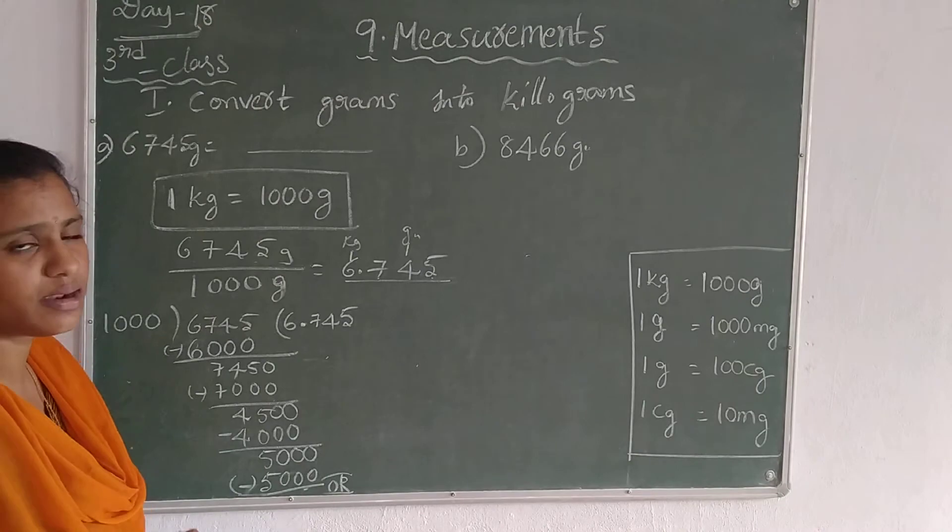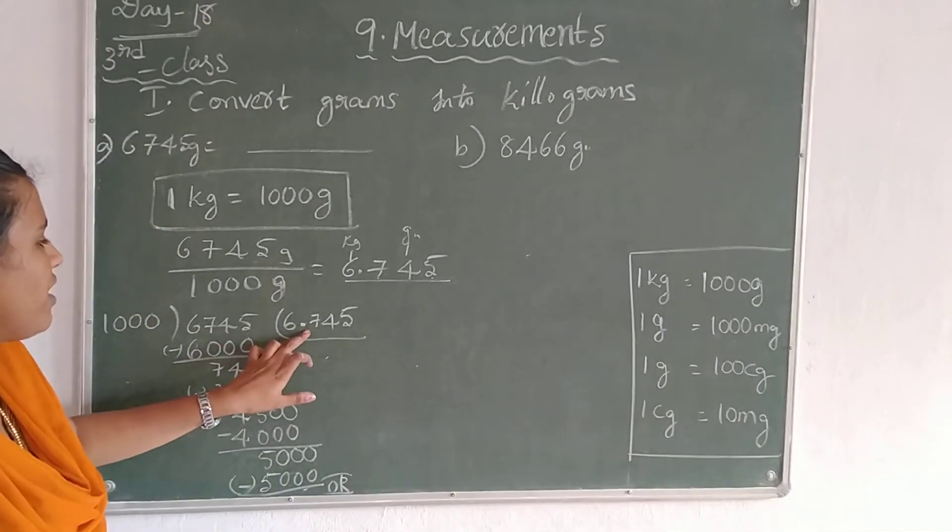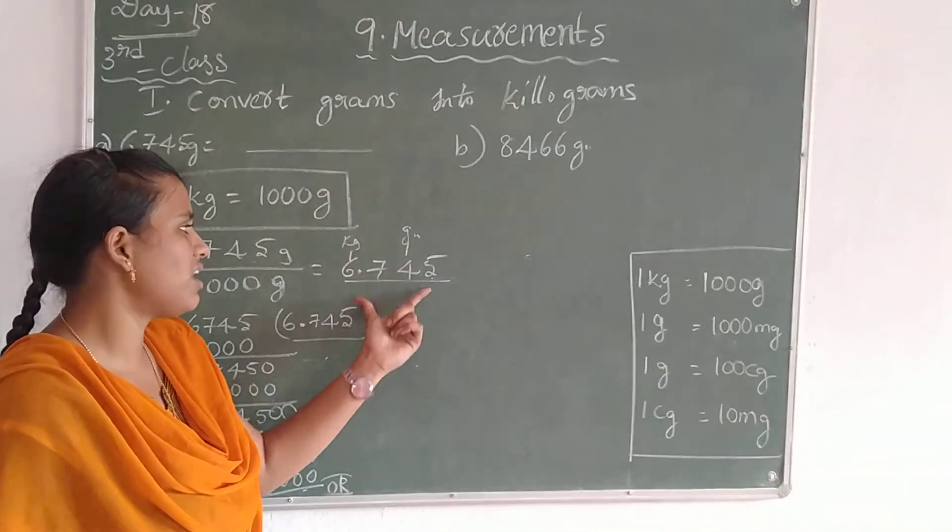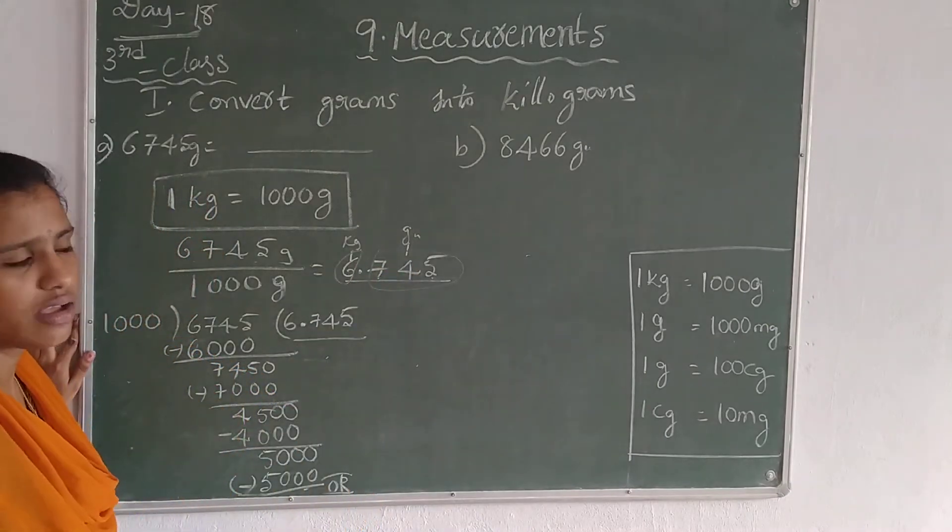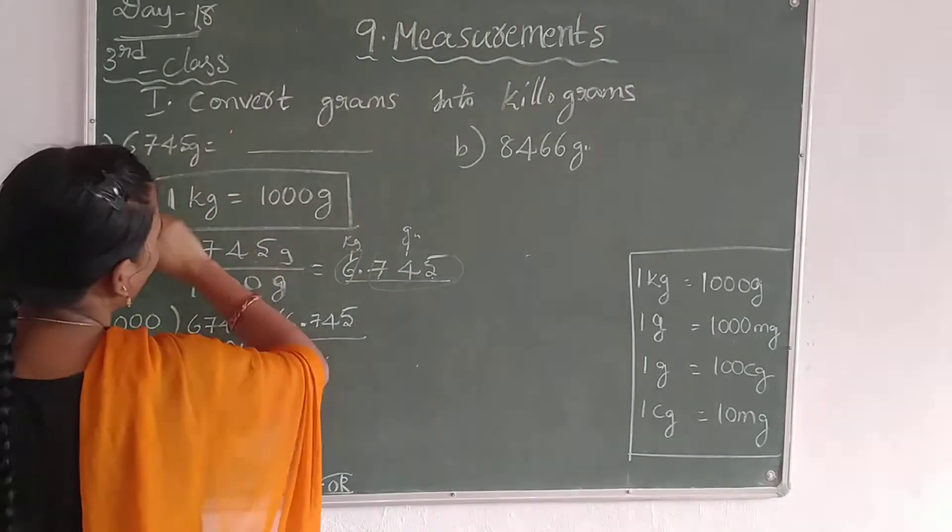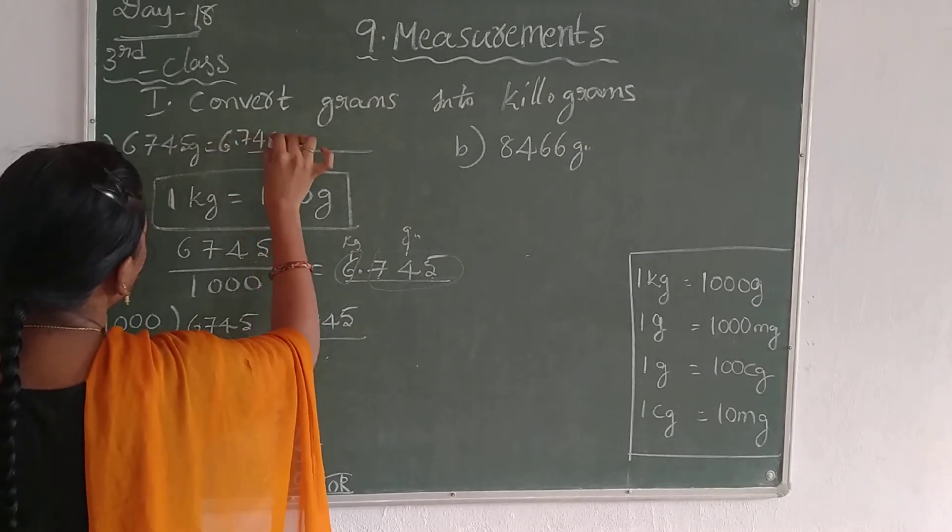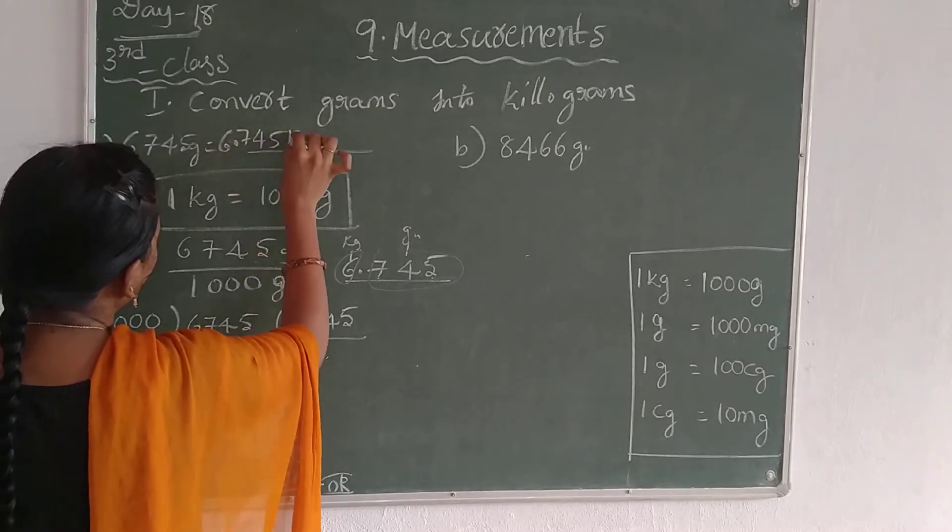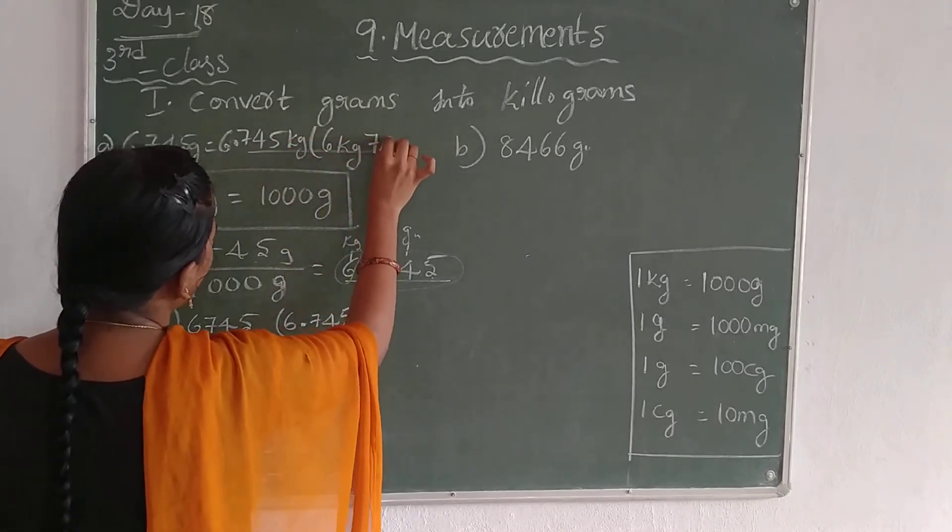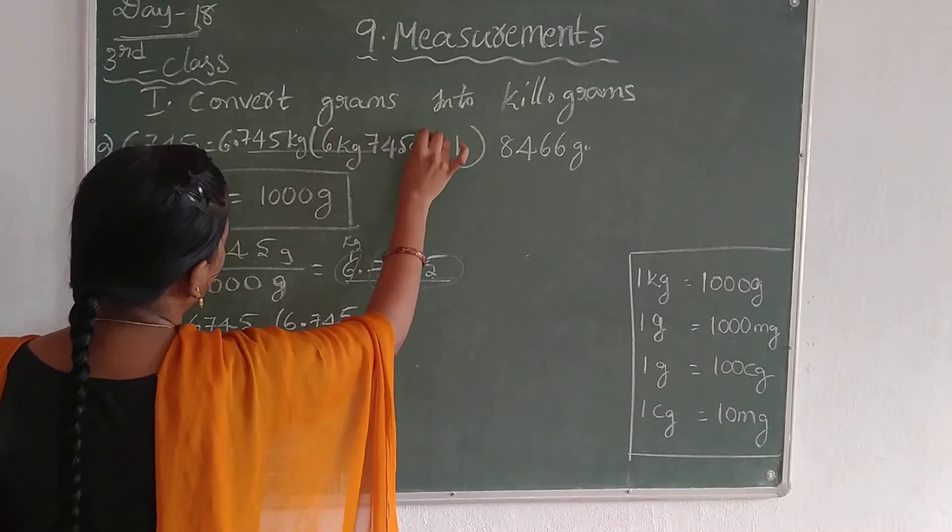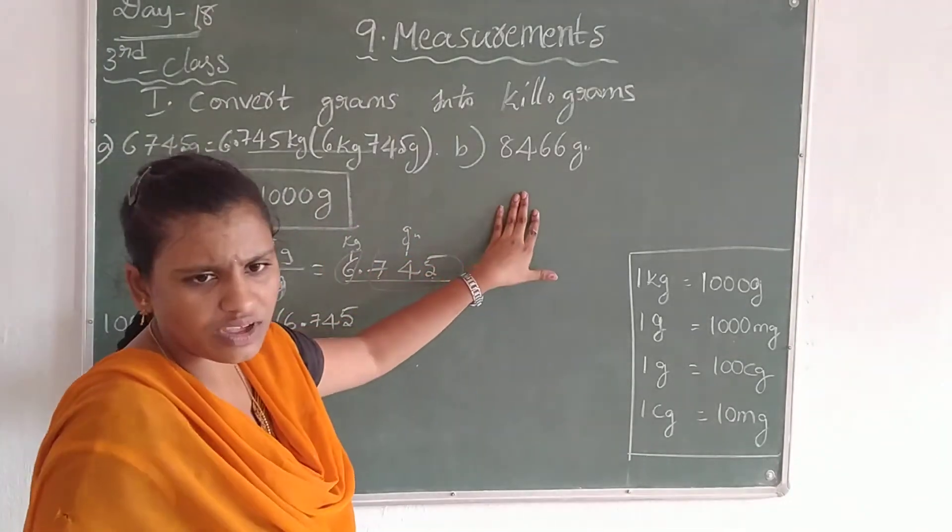What is the answer? 6.745. So this is the answer. Here is 6 kg, 745 are the grams. So write 6.745 kilograms, that is 6 kg 745 grams. Are you strict children this one?